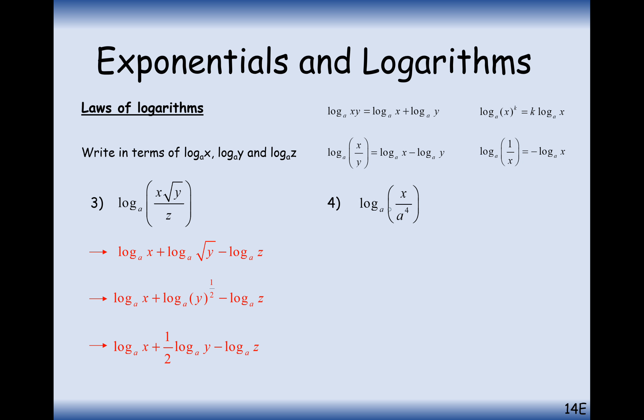For log base A of x divided by A to the 4, we split this using the subtraction law: log base A of x, leaving that alone, minus log base A of A to the 4. We bring the 4 to the front, and log base A of A is just 1, because A to the power of 1 gives you A. So the result is simply log base A of x subtract 4.